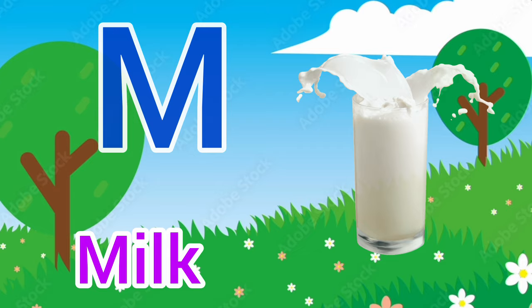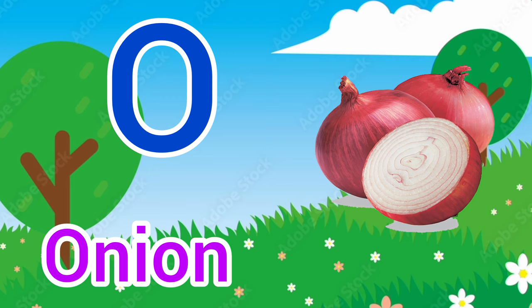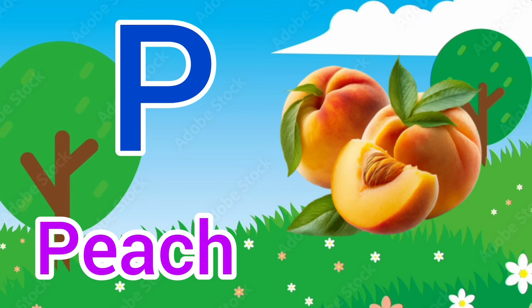N. N for nest, nest means ghosla. O. O for onion, onion means piyaz. P for peach, peach means aadu.